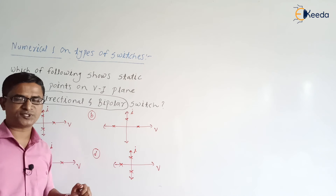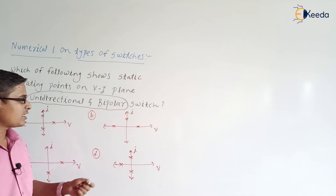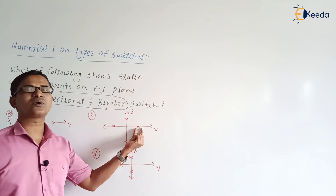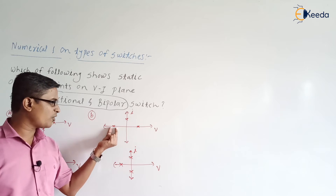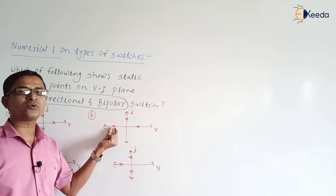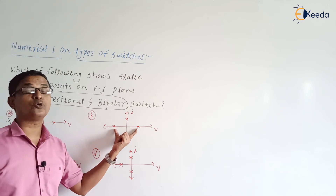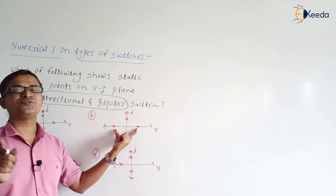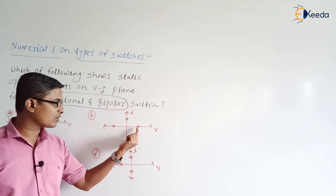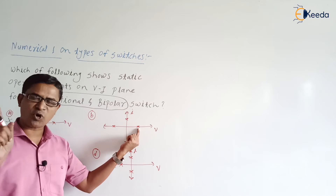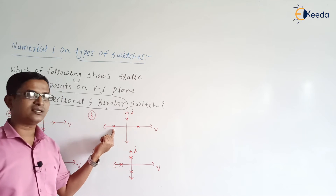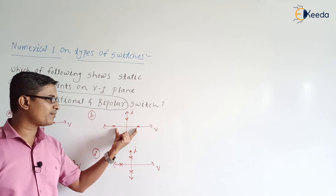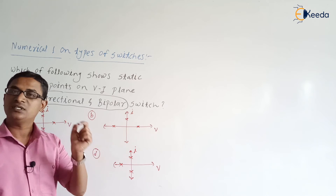Let us discuss the second option. Corresponding to one point, the voltage is positive and current is zero. Corresponding to another point, the voltage is negative and current is zero. This means the current is zero — the switch is in the off state — and the switch is blocking the positive voltage as well as negative voltage. So we can say this is a bipolar switch.